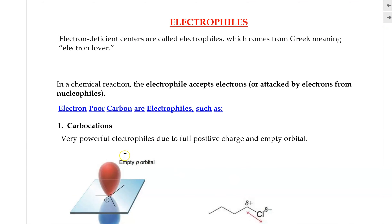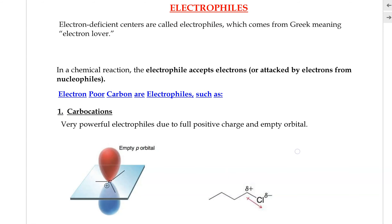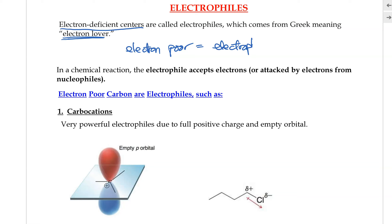Now let's go over the electrophile. Electrophiles are electron-deficient centers — the term electrophile means "electron-lover." Because they are electron-lovers, it is because they carry a positive charge, making them attracted to electrons. Anything that is electron-loving due to a partial or full positive charge makes a good electrophile. In a chemical reaction, the electrophile accepts electrons, or gets attacked by electrons from the nucleophile, so it is important to determine the electrophilic sites in an organic molecule.